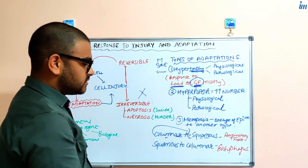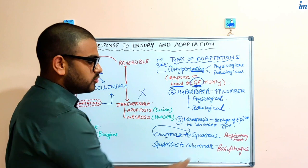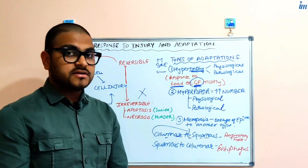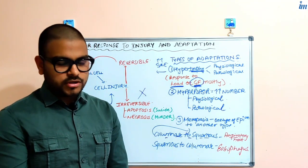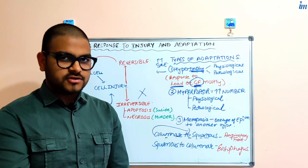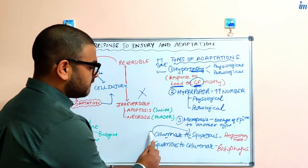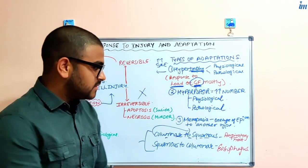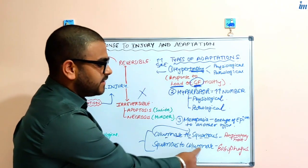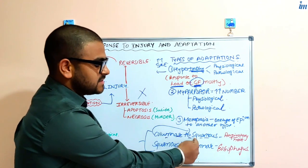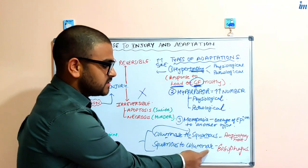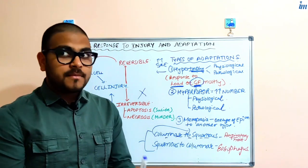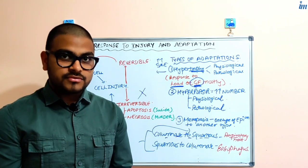And squamous to columnar metaplasia occurs in esophagus. In what case? Acid reflux from the stomach into the esophagus. What's the benefit of both of them? The only benefit is that the adapted or the metaplastic cell type, that is squamous and columnar, are better adapted to the stresses - that is chronic irritation by smoke and also by acid.